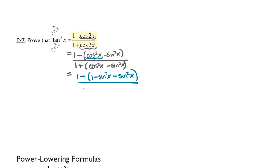In the denominator I want to end up with a cosine squared x. So if there are sine squared x's in there, I am going to replace those with an equivalent statement. Where my sine squared x is, I am now going to replace it with 1 minus cosine squared x. And you can see how I have stuff to simplify.